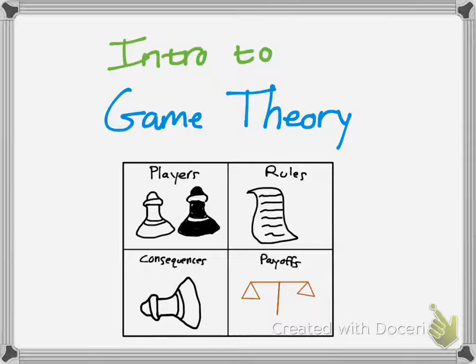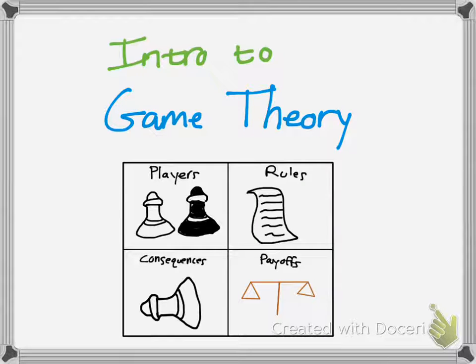Pretty much in game theory, you have your players, you have a set of rules, and there are consequences to those rules. Then you analyze the payoffs or tradeoffs in economics terms to see what your benefit is in choosing a strategy.